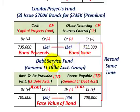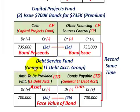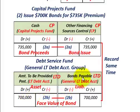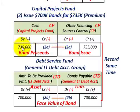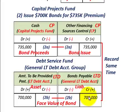At the same time, we record entries in the debt service fund under the general long-term debt account group. We debit 'amount to be provided for payment of long-term debt' — an asset account — for $700,000, which is the face value of the bond. Then we credit bonds payable for $700,000, also at face value. So the capital projects fund records what you actually received, while the debt service fund records the face value you'll have to pay back. Both are recorded at the same time.